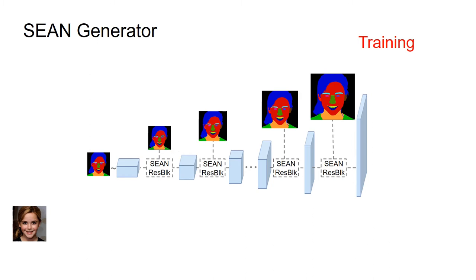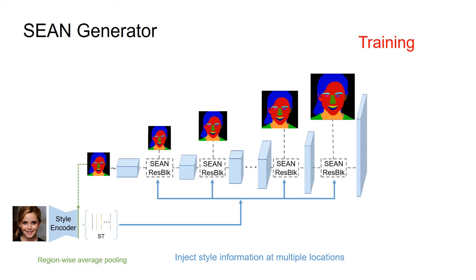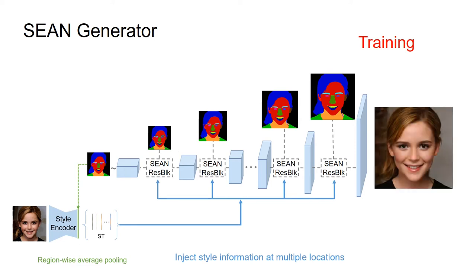We model the network training as reconstructing the input image by its corresponding segmentation mask and the extracted per-region style codes.